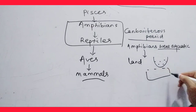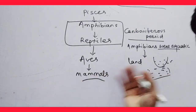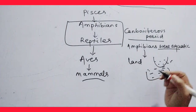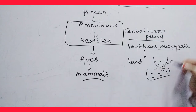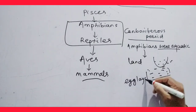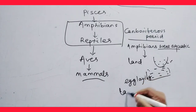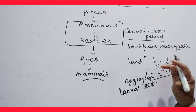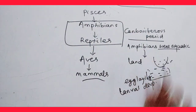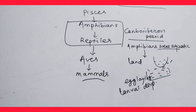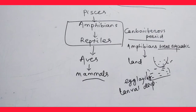The reptiles could remain on land, but the amphibians remained near the water bodies because they had certain requirements. They required water for egg laying, and water was also essential as a habitat for larval development. Due to these processes they remained near water and never entered into the deep arid climate.